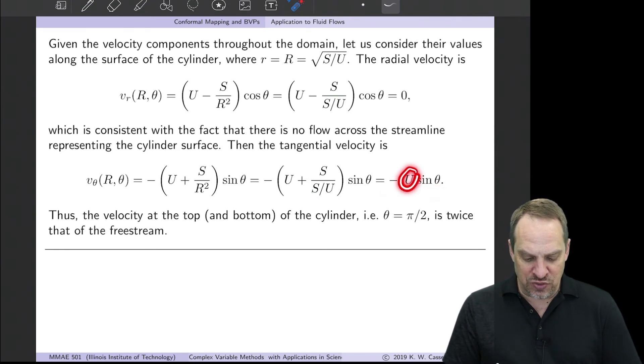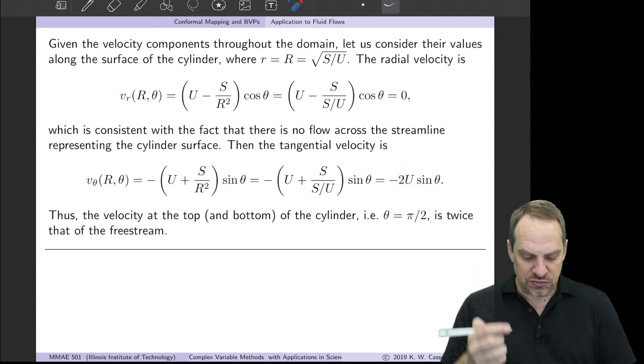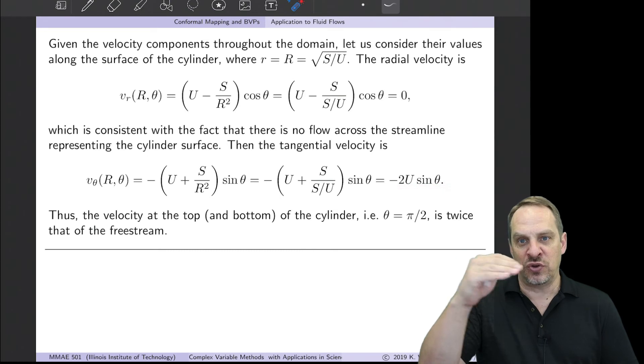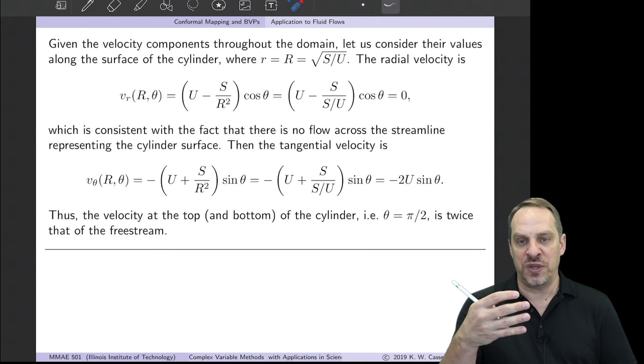Remember, capital U, that's the incoming velocity of the uniform flow. So what this is saying is, as you pass over and under the cylinder, a point at the very top or bottom, when θ is π/2, for example, sin(π/2) is just 1. So the velocity is -2U.